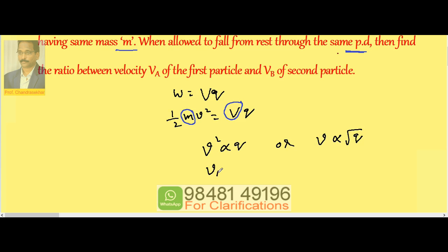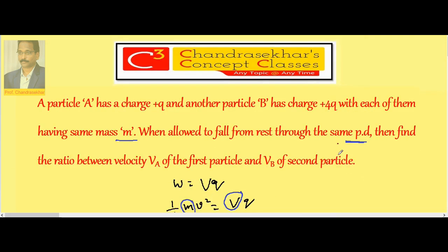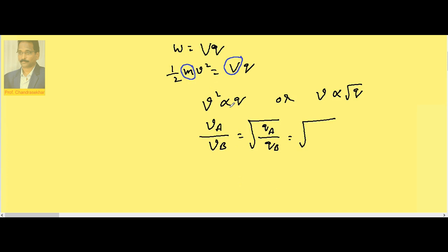So velocity of A by velocity of B is equal to charge on A divided by charge on B under root. So charge on A is Q and charge on B is 4Q. So it is Q by 4Q. Q and Q gets cancelled.